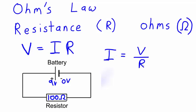I got that just by dividing both sides by the resistance. Then, all I need to do is substitute in the numbers to find the current.